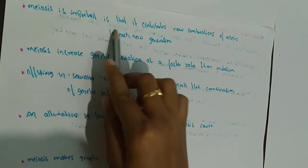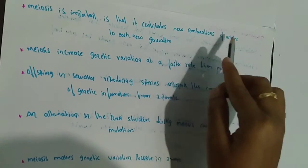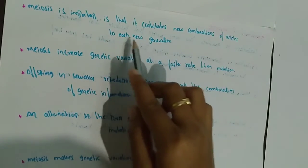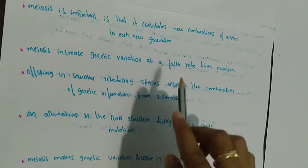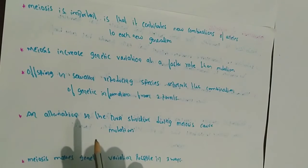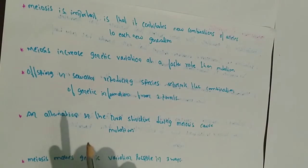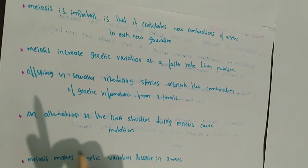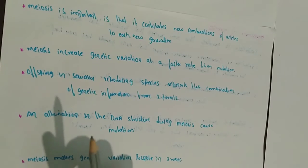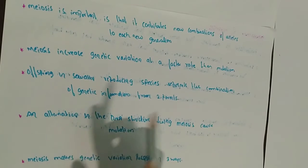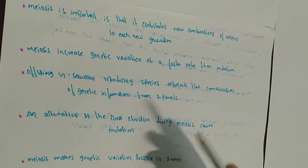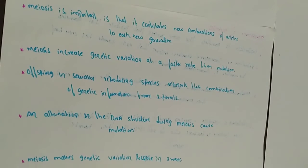Meiosis contributes new combinations of alleles to each new generation. Alleles are pairs or series of genes on chromosomes that determine hereditary characters — the passing of physical or mental characteristics genetically from one generation to another.